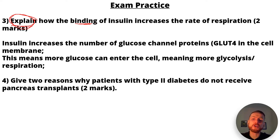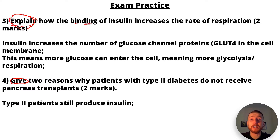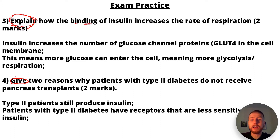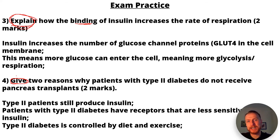Question four: give two reasons why patients with type 2 diabetes do not receive pancreas transplants. First: type 2 patients still produce insulin. Second: patients with type 2 diabetes have receptors that are less sensitive. A third mark can be gained for saying type 2 diabetes is controlled by diet and exercise, so a transplant isn't necessarily needed.